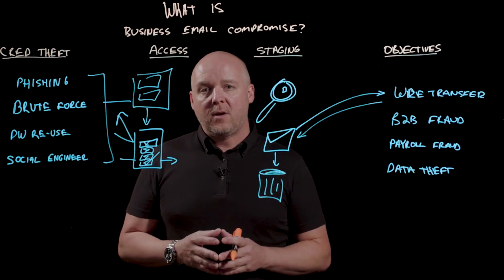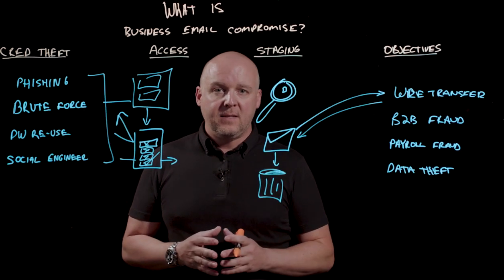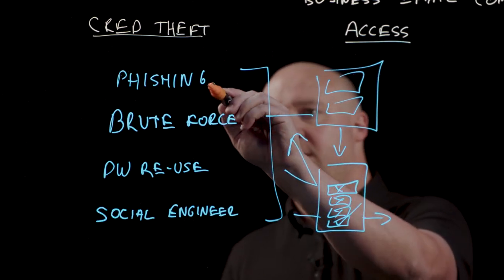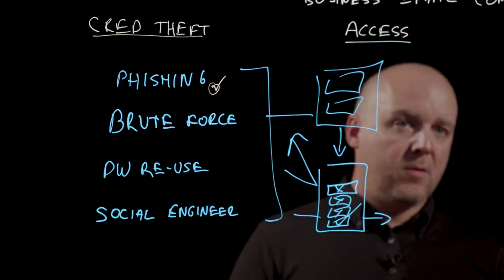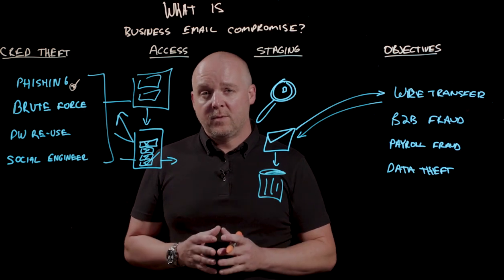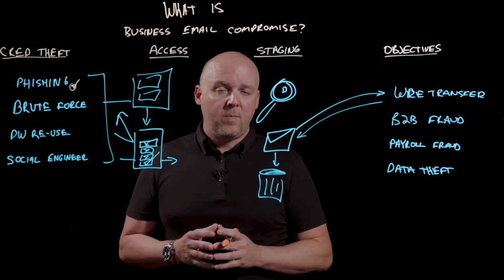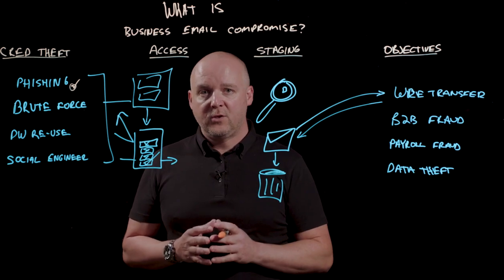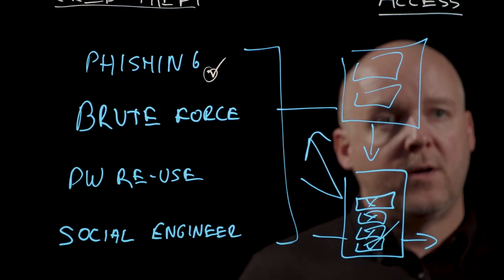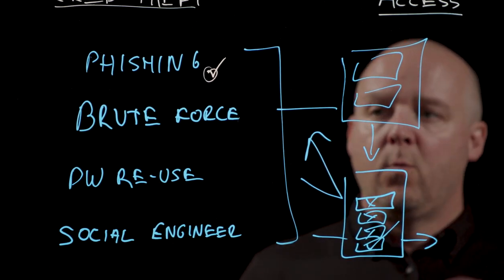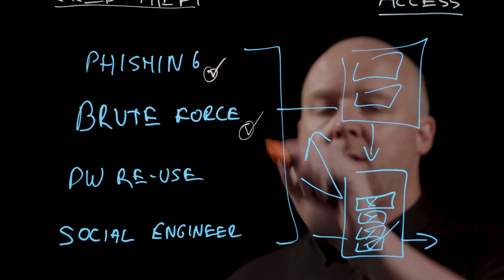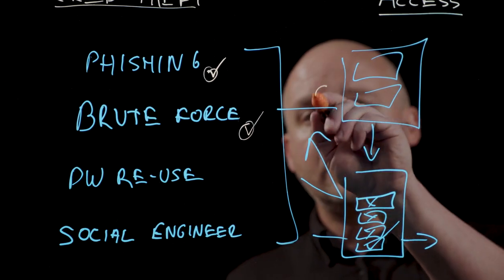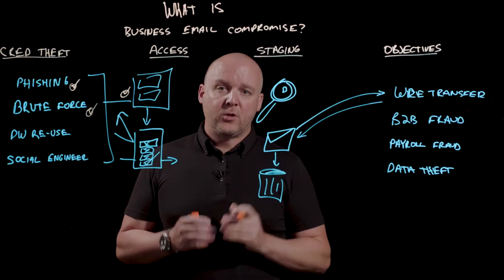So how does Arctic Wolf help disrupt BEC attacks? It starts at the very beginning of the kill chain. Between our native integration with email security solutions and the email platforms themselves, we also have our own ability to understand if users are going to known and suspicious phishing sites. Because we're also monitoring all authentication activity, we can identify signs of brute force in progress. We can also identify things like impossible travel and logins from restricted countries.